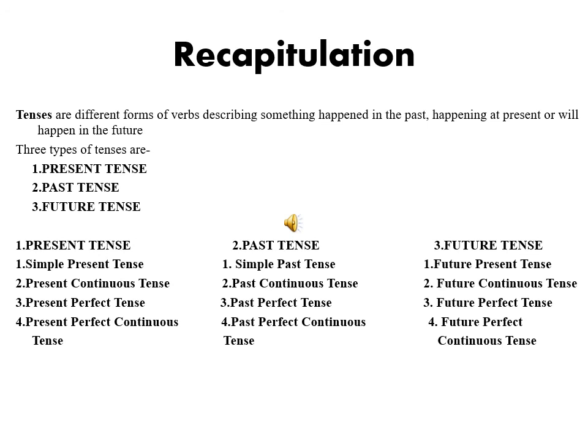Let us quickly recapitulate what we studied today. Tenses are different forms of verbs describing something happened in past, happening in present, or will happen in future. Three types of tenses are present tense, past tense, and future tense. Present tense has four types: simple present tense, present continuous tense, present perfect tense, and present perfect continuous tense.